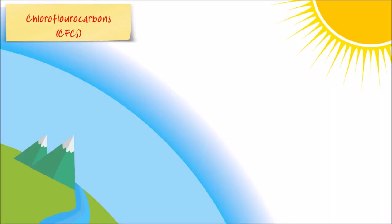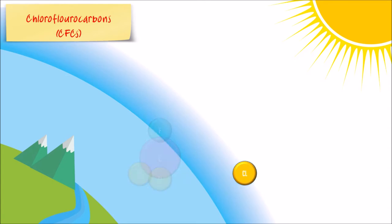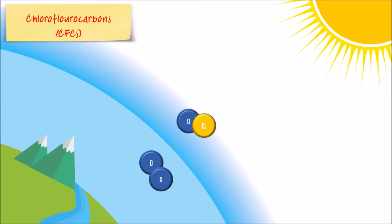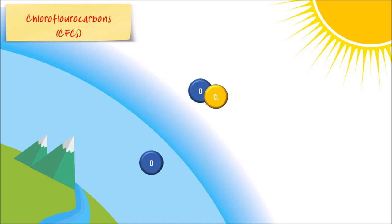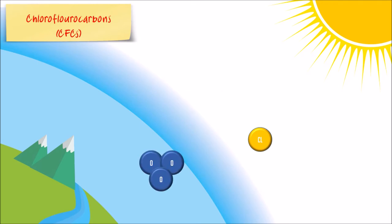When ultraviolet light strikes a CFC molecule in the upper atmosphere, a carbon-chlorine bond breaks, producing a free chlorine atom. The chlorine atom then reacts with ozone molecules, breaking the ozone molecule apart and forming an ordinary oxygen molecule and a chlorine monoxide molecule. When a free oxygen atom reacts with the chlorine monoxide, it too breaks apart, producing again a free chlorine atom that can repeat the process. A single CFC molecule can thus destroy up to 100,000 ozone molecules.